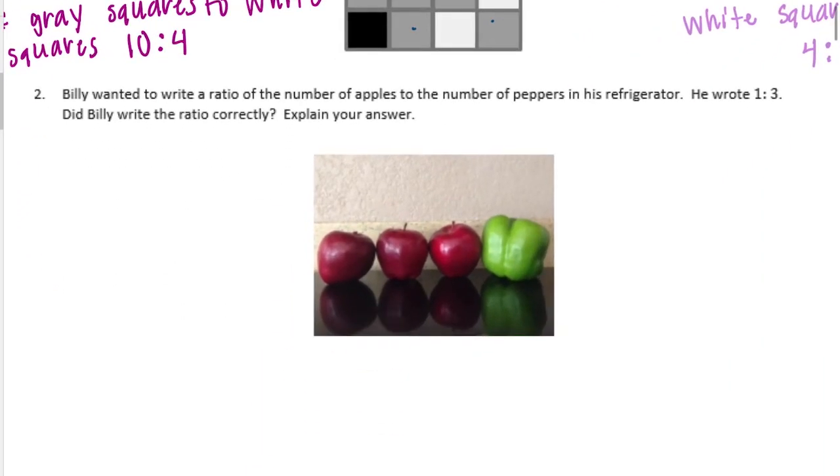Number two. Billy wanted to write a ratio of the number of apples to the number of peppers in his refrigerator. He wrote one to three. Did Billy write the ratio correctly? Let's see.